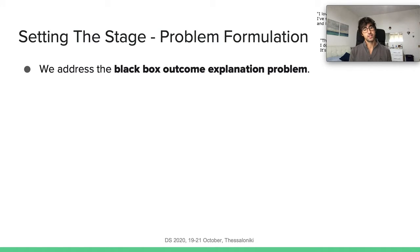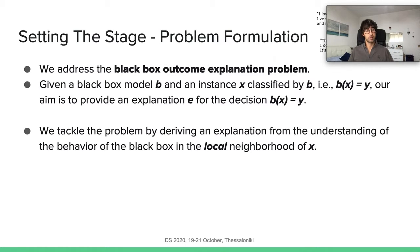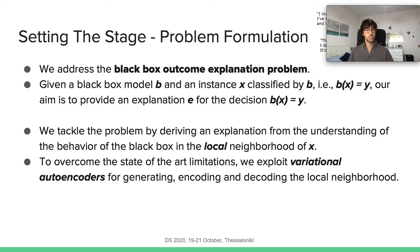From an academic point of view, what we want to address is the black box outcome explanation problem. We are given a black box model B and an instance X classified by the system. What we want to provide is an explanation for the decision Y returned by the black box. We want to tackle this problem by deriving a local neighborhood of the instance X much more accurate than the state of the art, using variational autoencoders for generating and encoding and decoding local neighborhoods that are more realistic compared to other methods such as LIME, which works only by suppression.